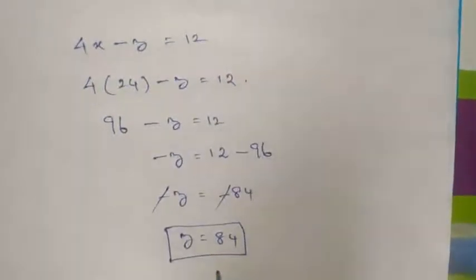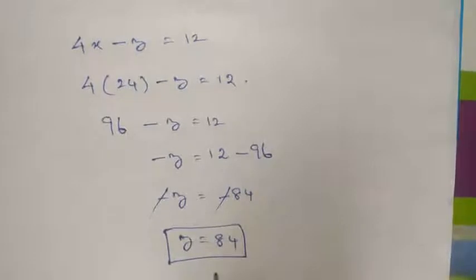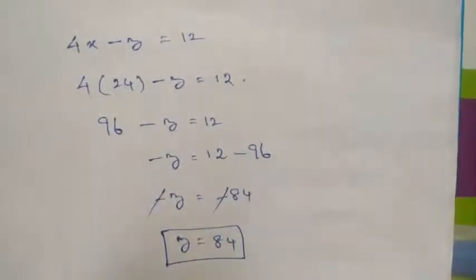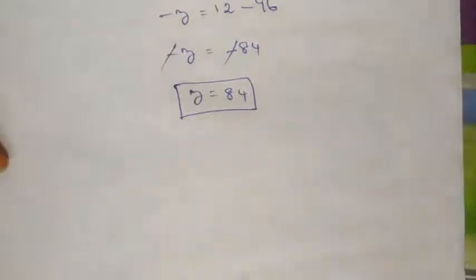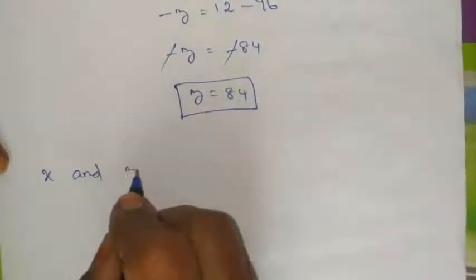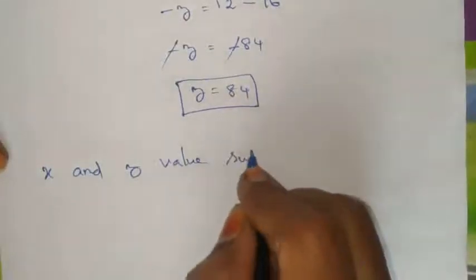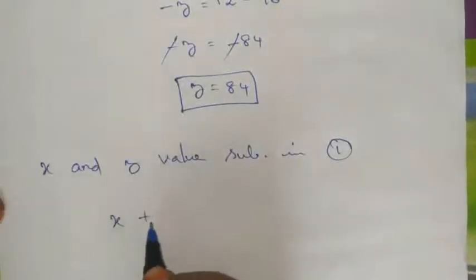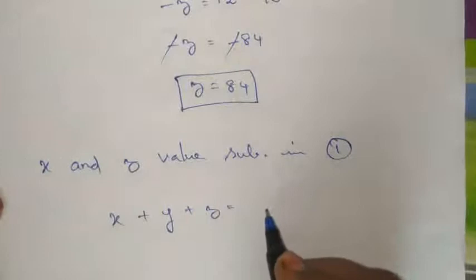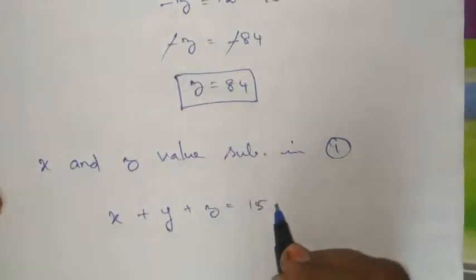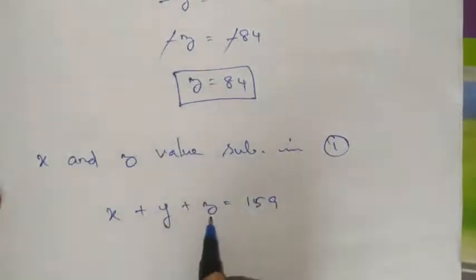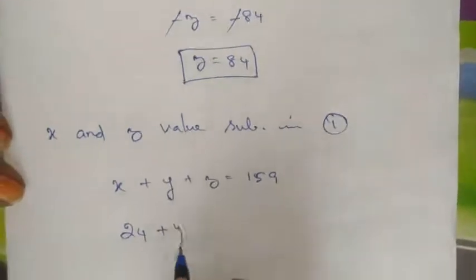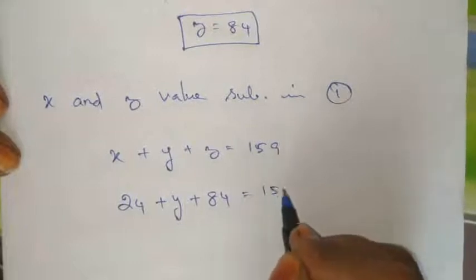The value of x is found, and z is found. Substituting x and z values into equation 1: x plus y plus z equals 159, so we can find y.